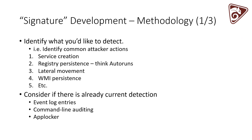Before going down that road, consider that there might be other detection mechanisms already present. In Windows 7 and above, you can enable process auditing, which goes to the event log anyway. You may not need WMI for process auditing, but you could. Also consider command line auditing, AppLocker in audit mode — if you wanted to track all modules being loaded, like device drivers, executables, and DLLs, that would already be logged if AppLocker is in enforce or audit mode. Consider other options first.